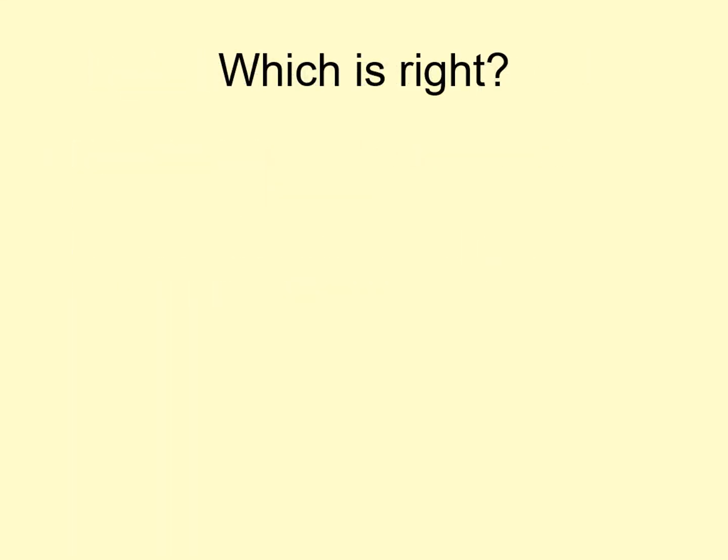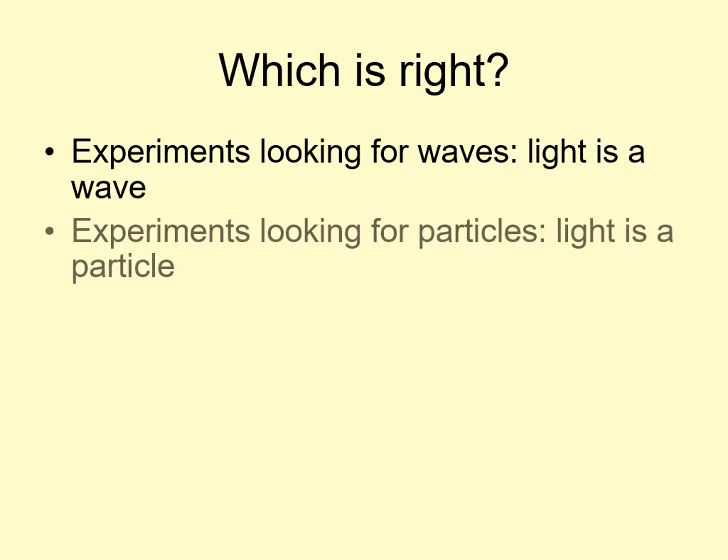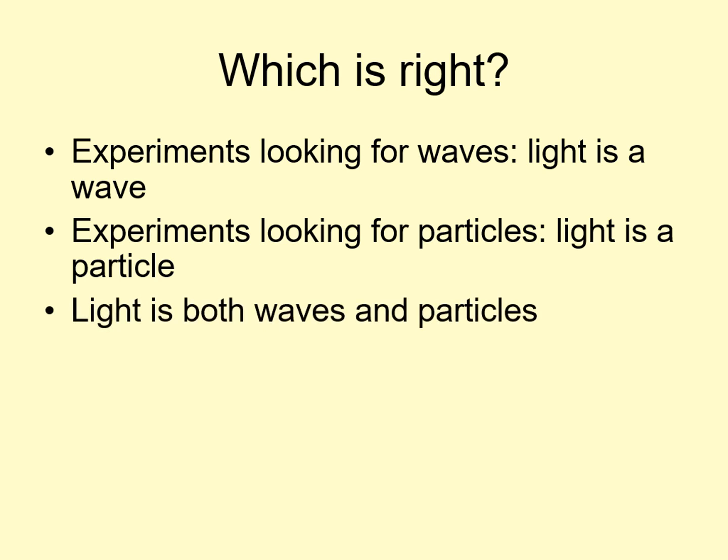By the early 20th century, there was a real conundrum developing around light. On the one hand, whenever folks did experiments to test if light was behaving as a wave, they found that, yes, it did behave as a wave. On the other hand, whenever they tested to see if light was behaving as a stream of particles, they found that, yes, it behaves as a stream of particles. This forced physicists into appreciating that there isn't an either-or answer here. Light is a wave, and it's a stream of particles at the same time. This was the beginning of the amazing world of quantum mechanics.